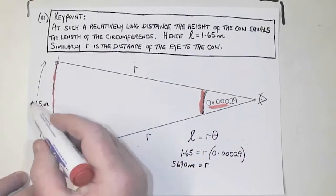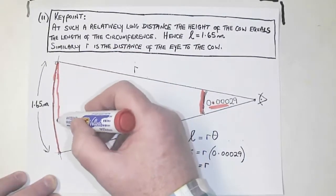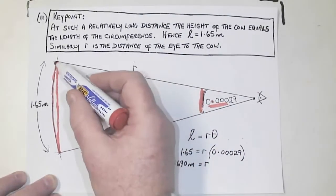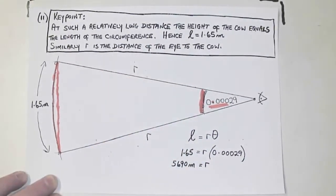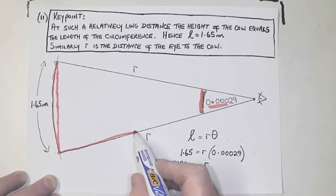It's a long, long distance out to there. And really, the height of the cow is this much. But the curve and the height of the cow are almost identical at a big distance. Also, R is the radius of a circle.